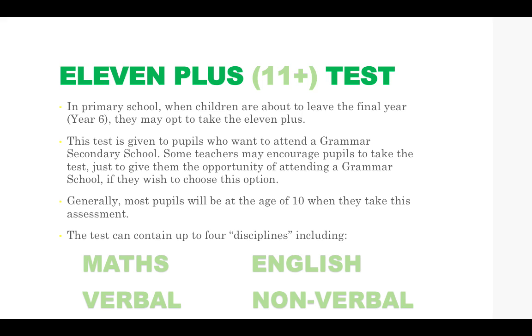Some teachers may encourage their pupils to take this test just to give them the opportunity of attending a grammar school if they wish to choose this option. Generally most pupils will be at the age of 10 when they take this test and the test can contain up to 4 disciplines including maths, English, verbal and non-verbal reasoning.